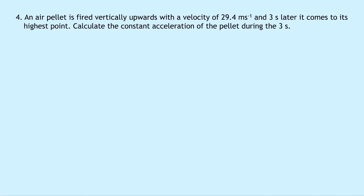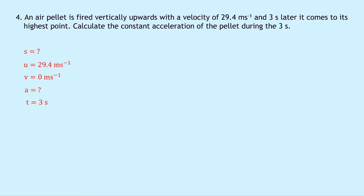Lastly, question four says that an air pellet is fired vertically upwards with a velocity of 29.4 meters per second, and three seconds later it comes to its highest point. Calculate the constant acceleration of the pellet during the three seconds. Writing down SUVAT on the left hand side: we don't know what S is, we know U is 29.4 meters per second, we know the final speed is zero meters per second, the acceleration is what we're trying to find, and the time is three seconds. So I'm going to put a star next to A.